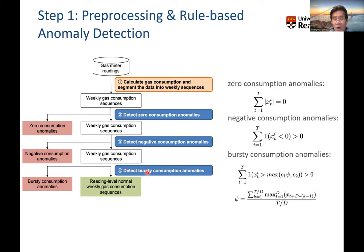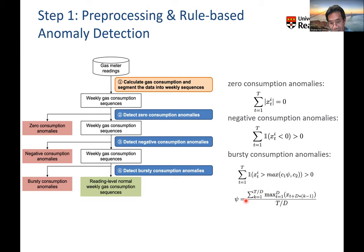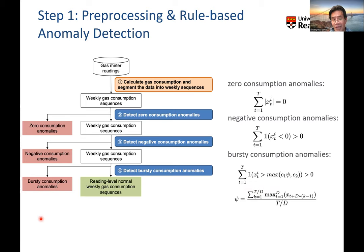After removing zero consumption, negative consumption, and bursty consumption anomalies, we obtain the reading-level normal weekly gas consumption sequence. The second step is to extract normal user patterns. We use two kinds of evaluation: intra-user consistency evaluation and inter-user consistency evaluation. Intra-user consistency means that for the same user, the weekly pattern of this week and previous weeks should be similar. If the weekly pattern is not consistent, something is wrong. We use Pearson correlation to calculate the coefficient, and if the correlation coefficient is less than 0.3, we say it is weakly consistent and flag it as anomalous.